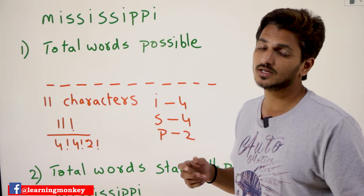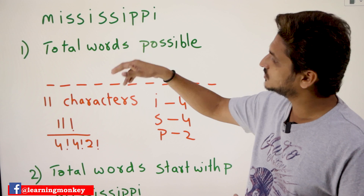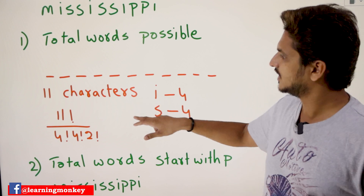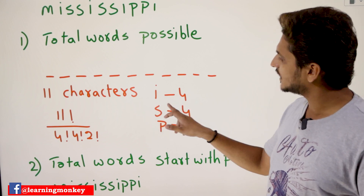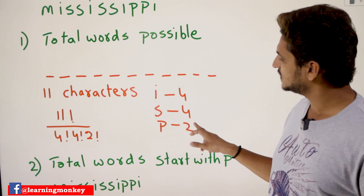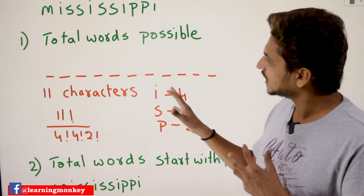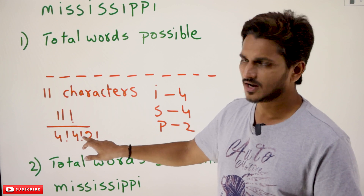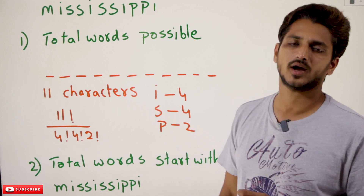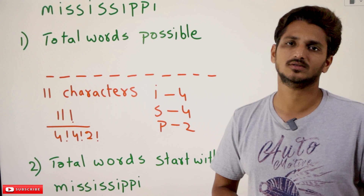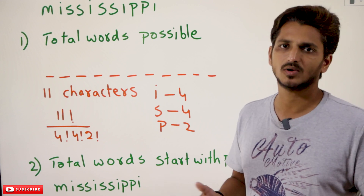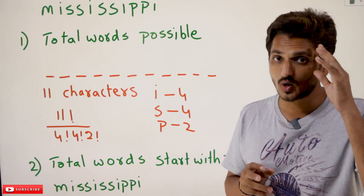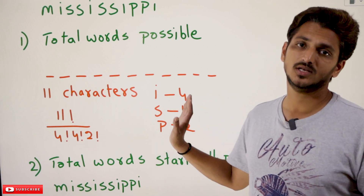But in our last class we discussed the formula. If this is the situation, what is the formula for identifying permutations with repetitions? See here: I is repeated four times, S is repeated four times, P is repeated two times. So total number of possibilities are 11 factorial divided by 4 factorial, 4 factorial, and 2 factorial. This is the formula which we discussed. Most examples are simply based on applying the formula — once you understand the formula it is very easy.